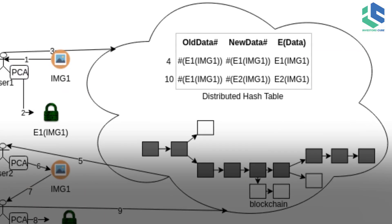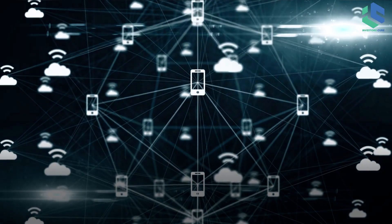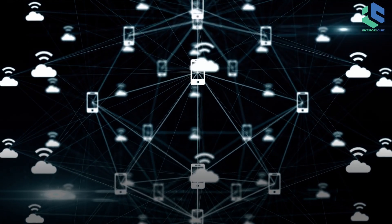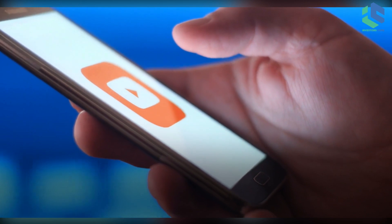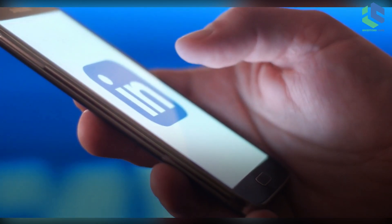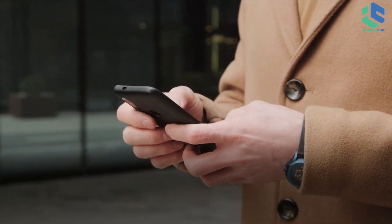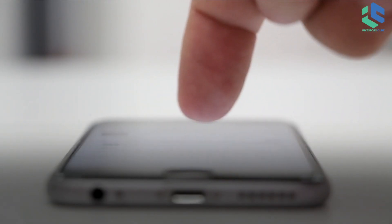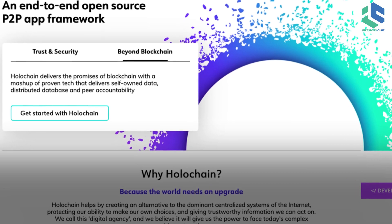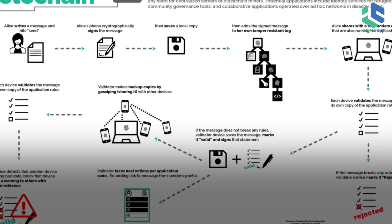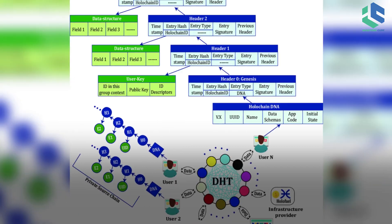Data is published to a shared environment known as a distributed hash table, or DHT, when it needs to be shared with the network. All of your tweets and comments in a Twitter-like app, your Uber trip requests, and your modifications in a collaborative document editor are stored on the DHT. Data that does not need to be shared with others can be kept private inside your source chain. In addition to holding their own data, each user of a Holocaine app saves a little piece of the app's DHT.